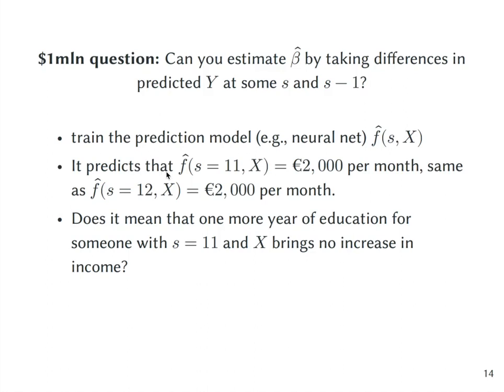Suppose you train your neural net to predict income based on schooling and other characteristics of individuals. Suppose your neural net predicts that someone with 11 years of schooling and some characteristics X will earn 2000 euro per month. Then you do the same prediction but for someone with 12 years of schooling and you get also 2000 euro per month.